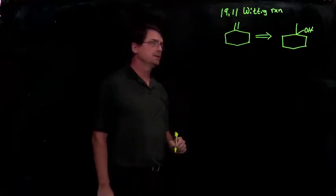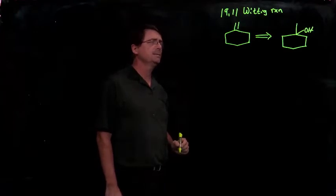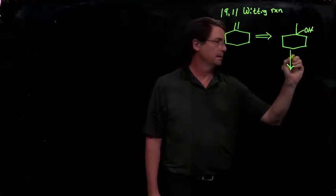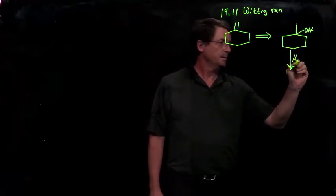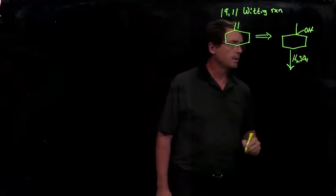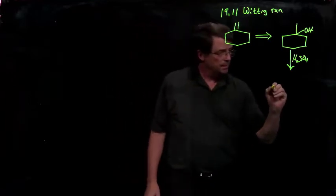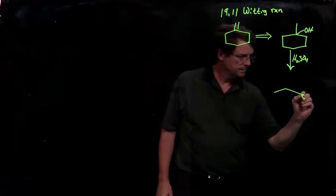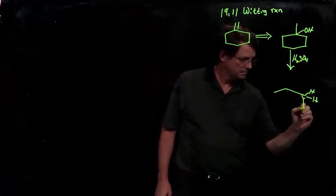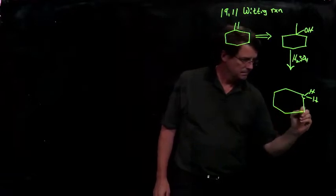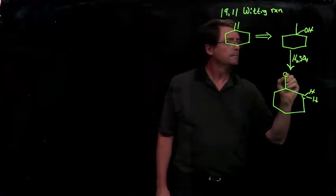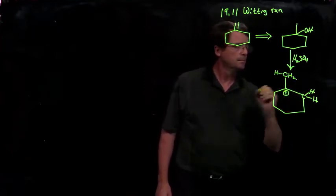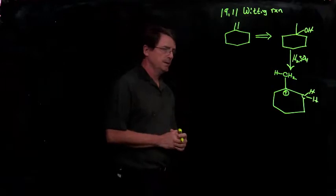Now that would be a reasonable retrosynthetic plan, but now let's think about this in the forward direction. If we treat this with H2SO4, which would be our E1 elimination reaction, we make the carbocation, but we see that there are two alpha hydrogens.